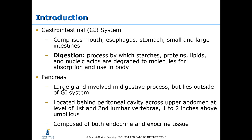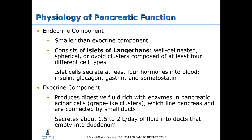The pancreas is a large gland involved in the digestive process but lies outside of the GI system. It's located behind the peritoneal cavity across the upper abdomen, at the left of the first and second lumbar vertebrae, one to two inches above the umbilicus. It's composed of both endocrine and exocrine tissue.